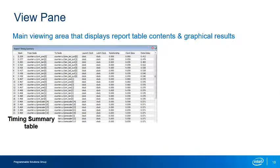The View pane is the main report viewing area of the Timing Analyzer GUI. By default, newly generated reports appear in the View pane. A Timing Summary Table is the simplest and most common type of report. Timing Analyzer is path-based, meaning each and every path's timing is analyzed. Each row in a Timing Summary Report provides basic information about either a single path or a clock domain.